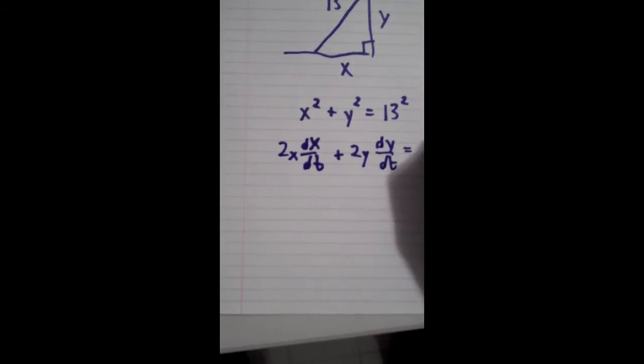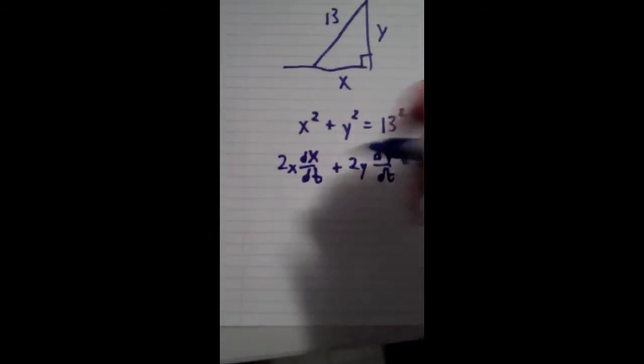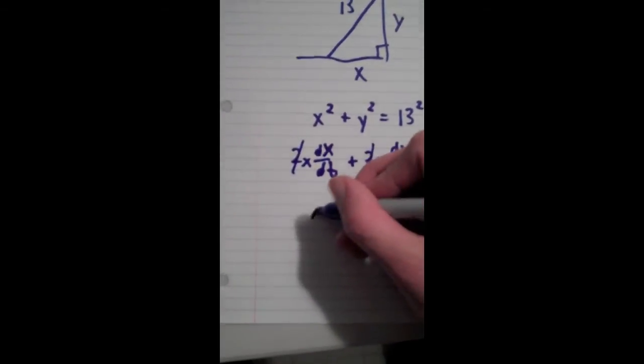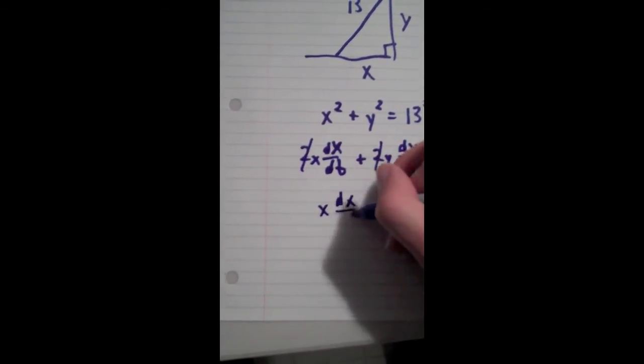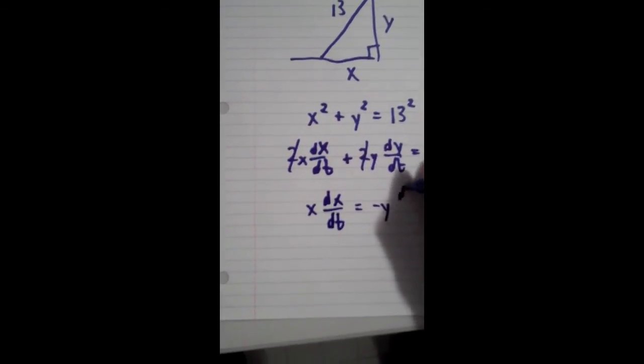I'm going to do the same with the y to get 2y dy/dt. And that is equal to 0. So, okay, and now I'm going to divide by 2 on both sides. Because of the 0, we can just do that. And now we get x dx/dt equals negative y dy/dt.